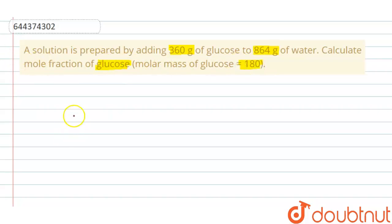So the mole fraction of glucose, let's say it is given by x_g, is equal to the number of moles of glucose in the solution divided by the total number of moles of the components which are present in the solution.